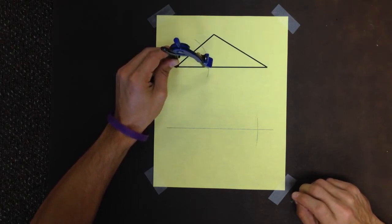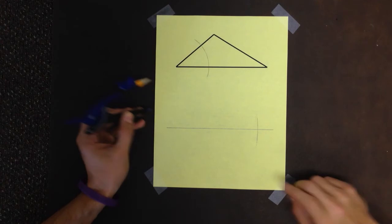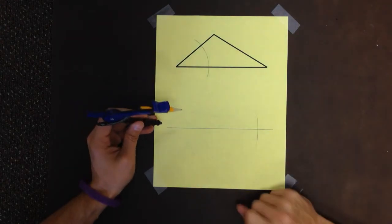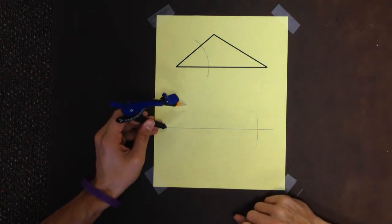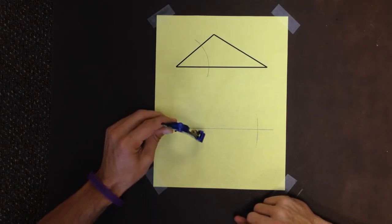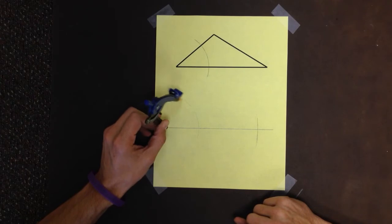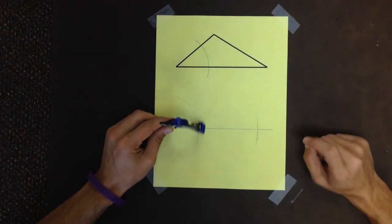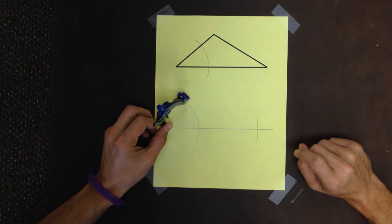And I do the exact same thing down here. This point is going to be representative of that vertex, so I do the same thing. Non-pencil end on that point, and then I draw an arc. Now we don't know where it's going to hit our line, so we've got to make it a little bigger than maybe normal. I do not change the width of my compass.